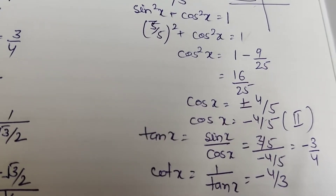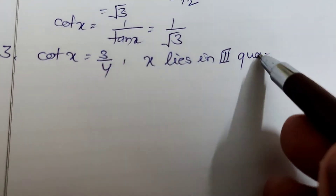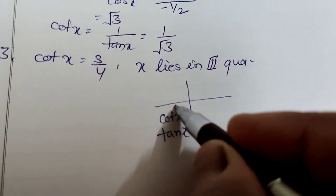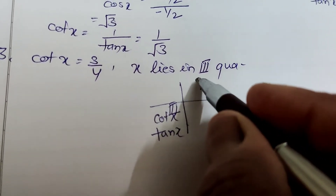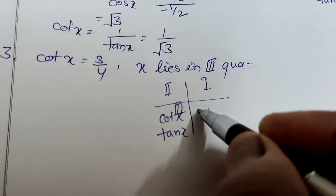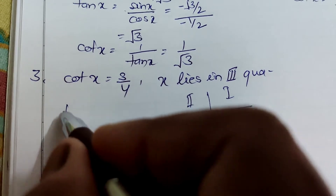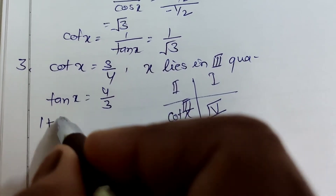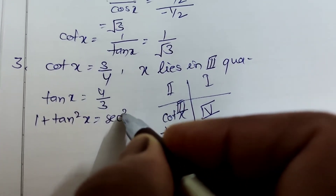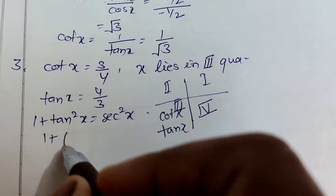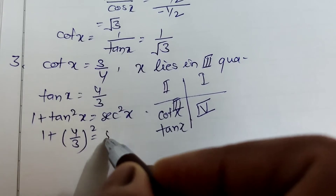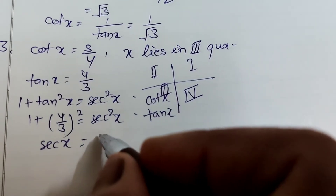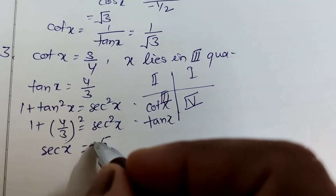Question 3: cot x = 3/4, x lies in the third quadrant. In the third quadrant, tan x and cot x are positive and all others are negative. Since cot x = 3/4, tan x = 4/3. Using 1 + tan²x = sec²x: 1 + (4/3)² = sec²x, giving sec²x = 1 + 16/9 = 25/9, so sec x = ±5/3.